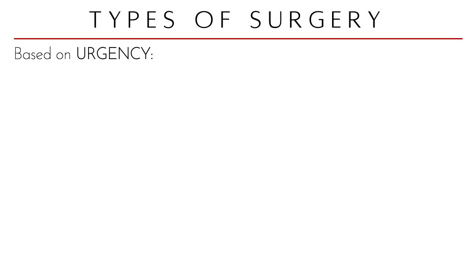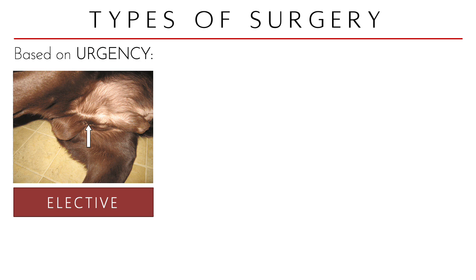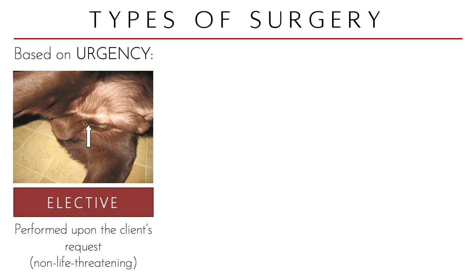So what are the different types of surgery? We can classify surgical procedures based on different factors. Number one is urgency — is it urgent to conduct or perform this surgical procedure? You have elective surgeries, which are usually done upon the client's request for owned animals. We usually do neutering — we call these spay and neuter campaigns for stray animals — to prevent overpopulation of the streets. Usually these are non-life threatening: if you do not do it, it's fine; if you do it, it's good. So, elective.